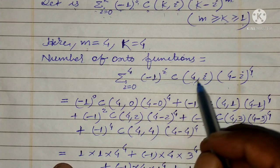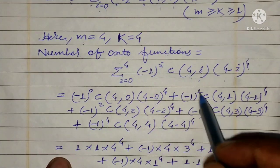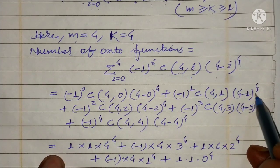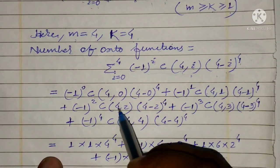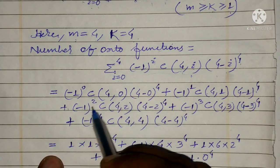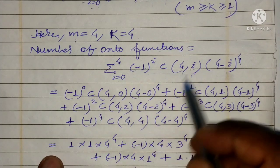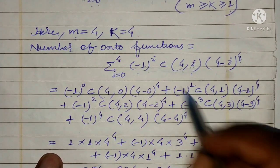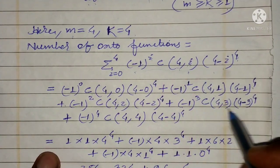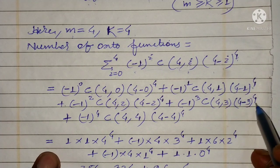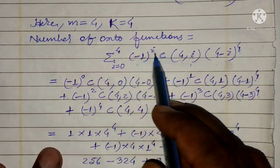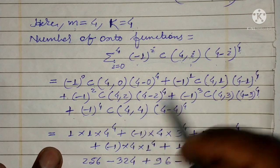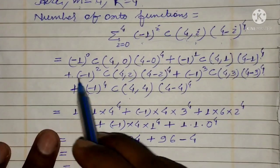Then putting i=1: (-1)^1 times C(4,1) times (4-1)^4. Then putting i=2: (-1)^2 times C(4,2) times (4-2)^4. Then plus (-1)^3 times C(4,3) times (4-3)^4. Then plus (-1)^4 times C(4,4) times (4-4)^4.